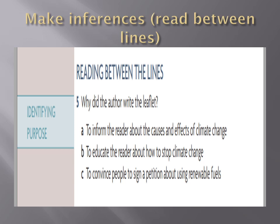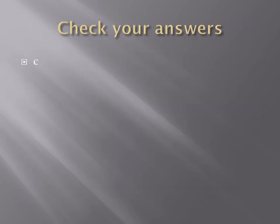Making inferences means reading between the lines to deeply understand what the article is about. Such information is not specifically mentioned in the article, but you can infer it from what you read. Why did the author write the leaflet? To inform about causes and effects of climate change? To educate about how to stop it? Or to convince people to sign a petition about using renewable fuels? The correct answer is C — to convince people to sign a petition to use renewable fuels.